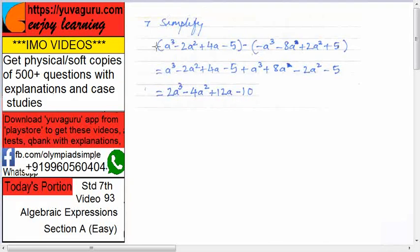Simplify. In bracket, a³ minus 2a² plus 4a minus 5, minus next bracket: minus a³ minus 8a minus 2a² plus 5. Solve the bracket first. Plus sign outside, so no change. Bring this as it is. Minus sign outside, so every sign changes. So it becomes plus a³.